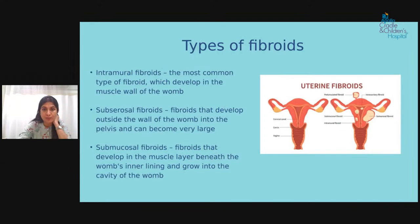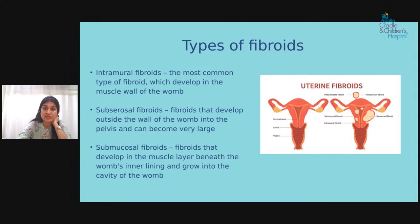The first type is intramural fibroid, the most common type seen in clinics. It is present inside the muscle of the womb and most often causes bleeding problems like excessive or heavy periods.